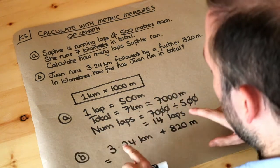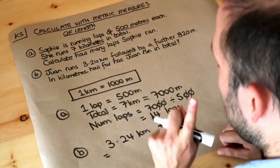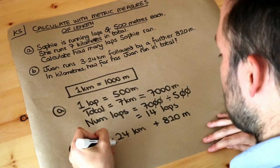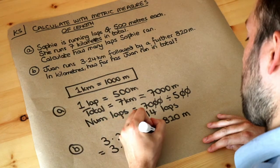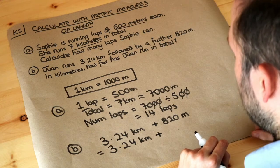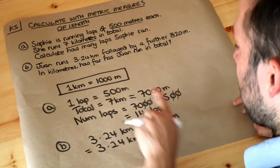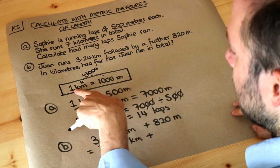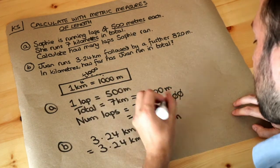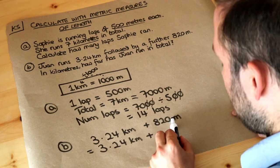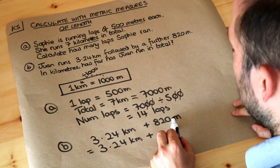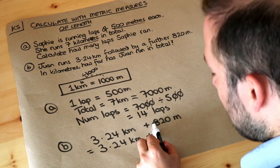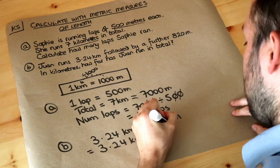Because we want the answer in kilometres, we need to convert 820 metres to kilometres. To get from metres to kilometres we divide by a thousand. The decimal point is currently at the end of 820; dividing by 1,000 moves it three places to the left — because 1,000 has three zeros — giving 0.820, or 0.82. So 820 metres is 0.82 kilometres.